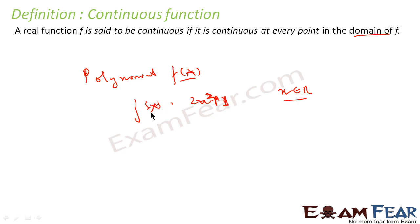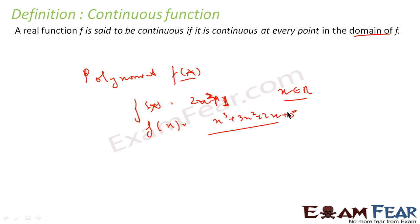For example, f(x) = x³ + 3x² + 2x + 5 — this is also a polynomial function, and if it is defined for all real numbers, you will say that this is continuous. This kind of function is continuous at every point. So first we discussed continuity at a point; now I am telling the whole function is continuous, meaning it is continuous at every point in the domain of f.